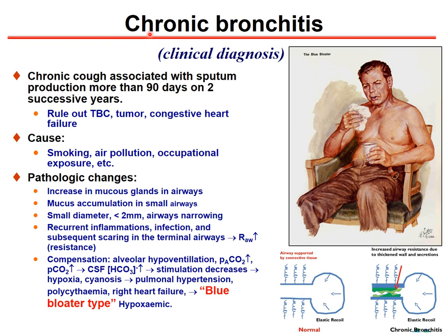The type of COPD most associated with smoking is chronic bronchitis, which is a clinical diagnosis. The diagnosis is made when the patient has a productive cough with sputum production for more than 90 days in two successive years. Tuberculosis, tumor, or congestive heart failure must be ruled out. Pathologic changes include increased mucus gland secretion, mucus accumulation in small airways, and plugging that makes it difficult to exhale or inhale.